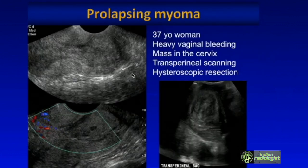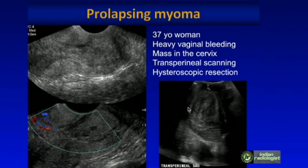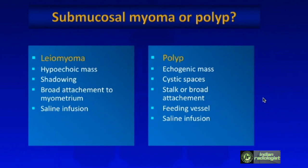This is a 37-year-old woman who presented to the emergency department with very heavy vaginal bleeding, and on examination there was a mass protruding in the cervix. With the vaginal probe, you can see the mass in the cervix and vessels leading to it. Transperineal scanning — placing the transducer on the patient's labia — was helpful here to show the myoma attempting to deliver itself through the vagina. This patient underwent emergency hysteroscopic resection due to marked anemia.